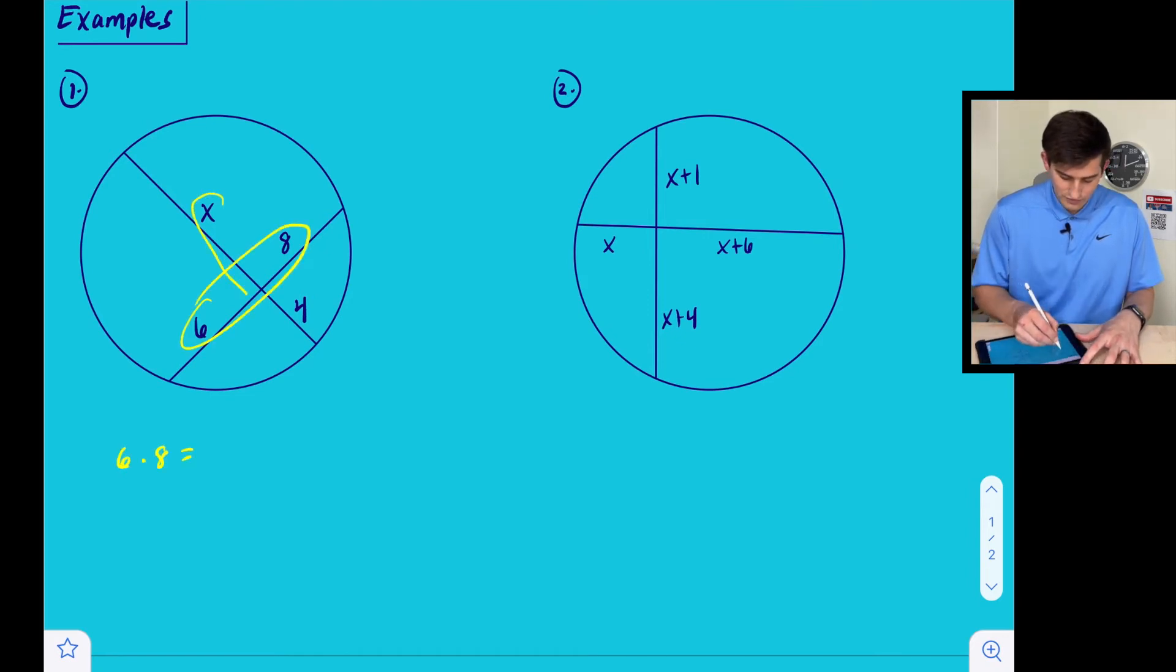So we know that these two, we can multiply together. So six times eight is equal to four times X. All right, so now we can just solve. So six times eight is 48, and if we want to divide both sides by four, we get X is equal to 12.